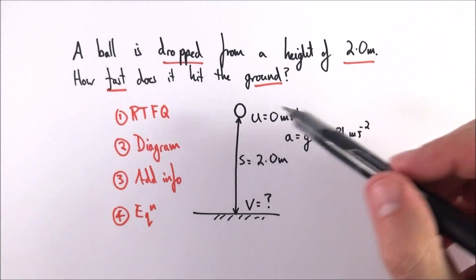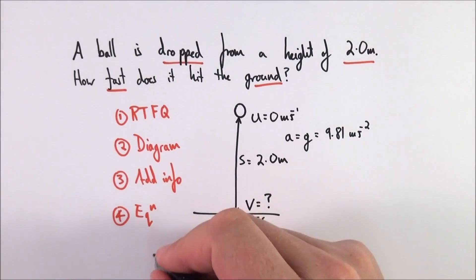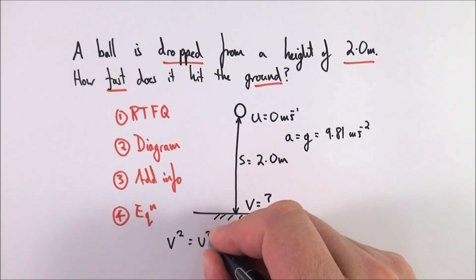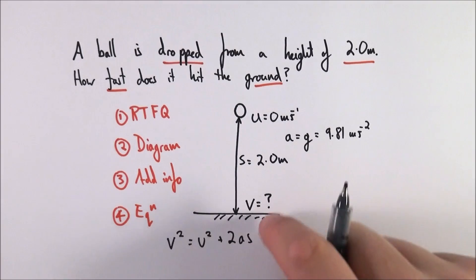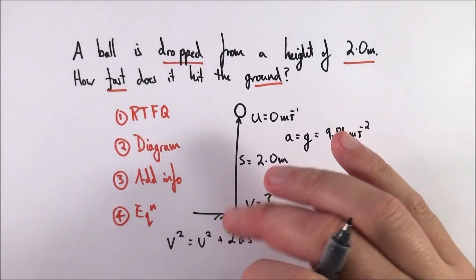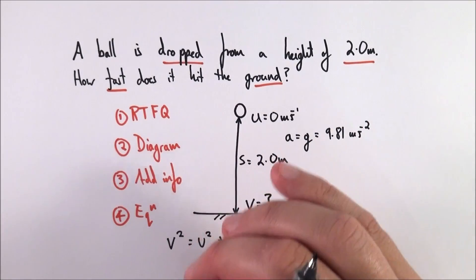I'm going to think about which equation has these terms in it, and I recall that you've got V squared is equal to U squared plus 2AS. I know it's in the data book, but you have to write it down.